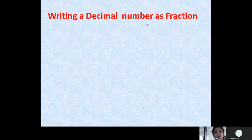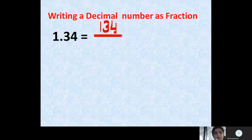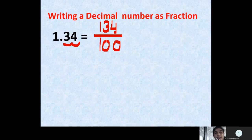Now let us learn how to write a fraction for a given decimal number. Suppose we have the decimal number 1.34 and we want to write it as a fraction. We write all the digits in the decimal number, giving us 134 as the numerator. For the denominator, we see how many digits are after the decimal — we have 2 digits after the decimal — so we write 1 followed by 2 zeros. So the decimal number 1.34 can be written as the fraction 134 upon 100.